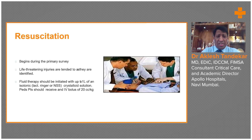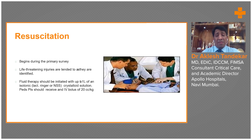Fluid therapy must be judicious. New guidelines recommend resuscitation be as conservative as possible, keeping mean blood pressure around 65 mmHg, which is sufficient for organ perfusion. For elderly patients over 70 years, systolic blood pressure should be more than 110. For middle-aged patients between 50 to 60 years, systolic blood pressure should be more than 100.